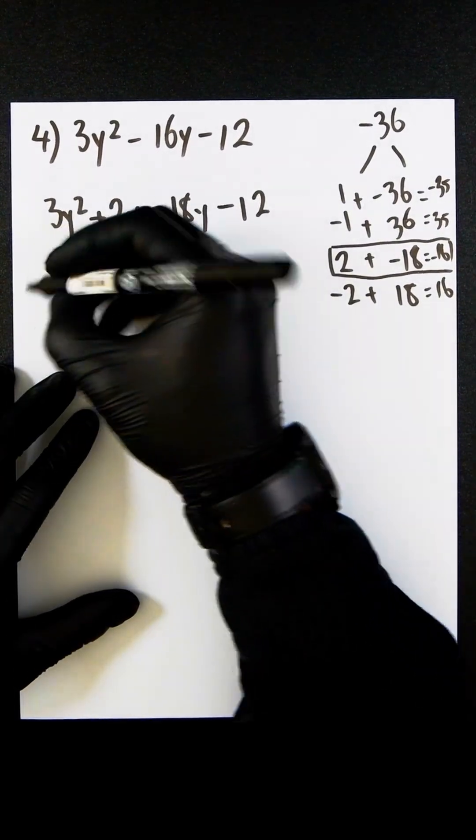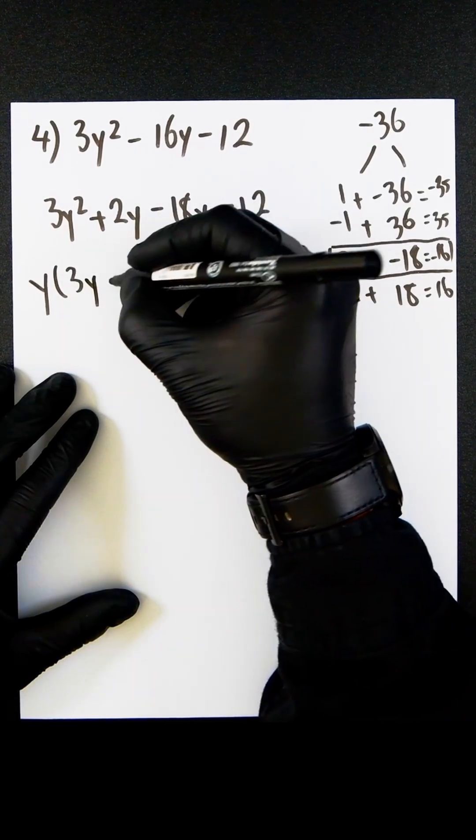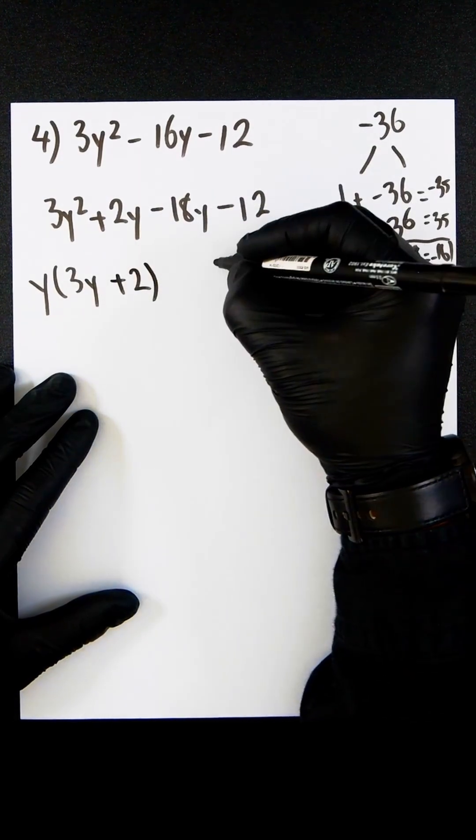Let's first take the first two terms. We can see that y is the common factor here, so we pull that out. Then we repeat with the other terms.